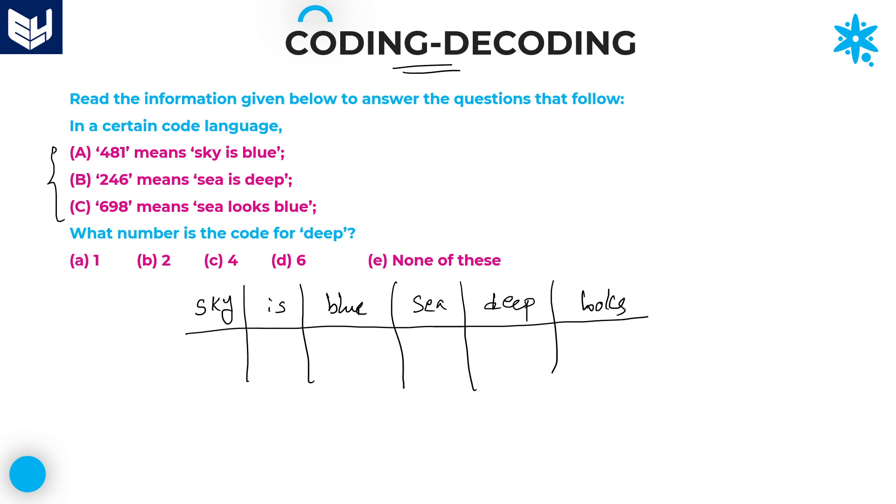For these six different words, what are the number codes? We need to identify those. First of all, we'll start with sky only.